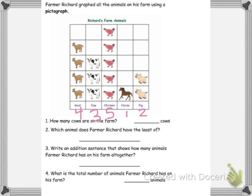It says how many cows are on the farm? We know there's three. Which animal does Farmer Richard have the least of? So which one has the least? Which number is smaller? Four, three, five, one, or two. Well, we know one's smaller, so what animal has one? The horse.